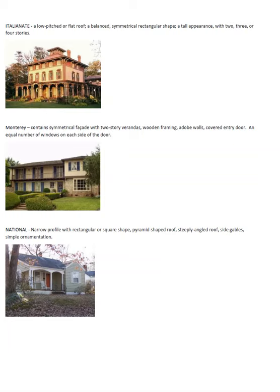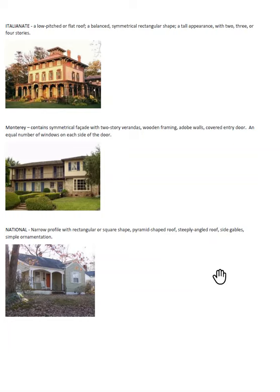The Italianate has a low-pitched roof, and a symmetrical rectangular house that always seems taller than it should be because of the upper row. There's a Monterey house — what makes it distinctive is that it has balconies on both floors: a two-story veranda, one on top and one on the bottom. The National house — there are a lot of National houses in downtown Indianapolis. If you ever get a chance, some of the older districts are great because you could fit a lot of them in a small area.